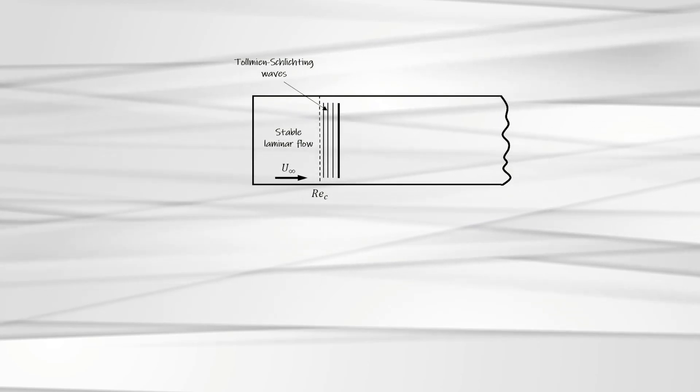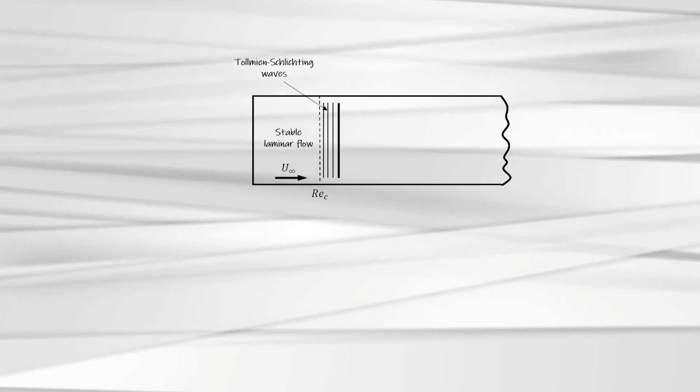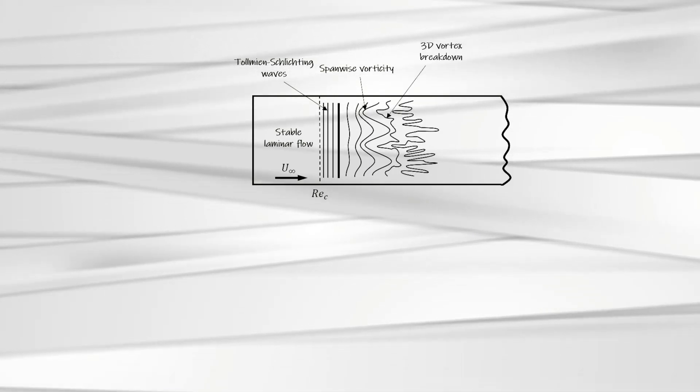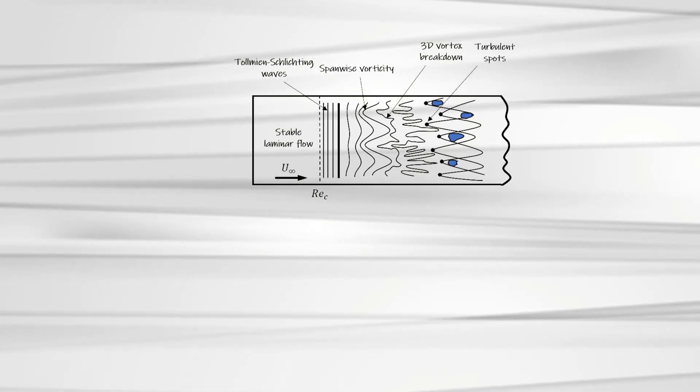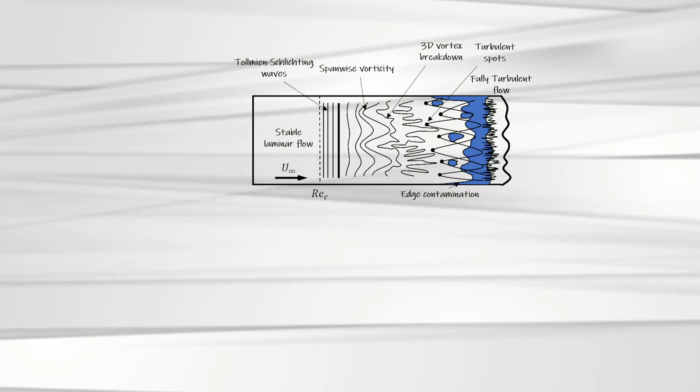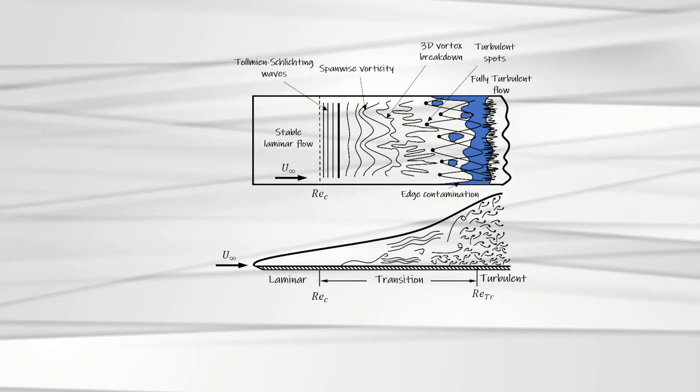The process of emergence of the Tollmien-Schlichting waves and the eventual transition to turbulence for a flow over a smooth surface follows these basic steps. At the leading edge of the plate, there is a stable laminar flow, until a location where the Reynolds number of the flow is below the critical Reynolds number. Beyond this point, two-dimensional Tollmien-Schlichting waves emerge and start travelling downstream. These 2D waves quickly become unstable and take the shape of three-dimensional hairpin eddies. These vortices then break down, creating a cascade of turbulent eddies, together forming the turbulent spots. These vortices then combine to form a fully turbulent region, thereby completing the transition process.